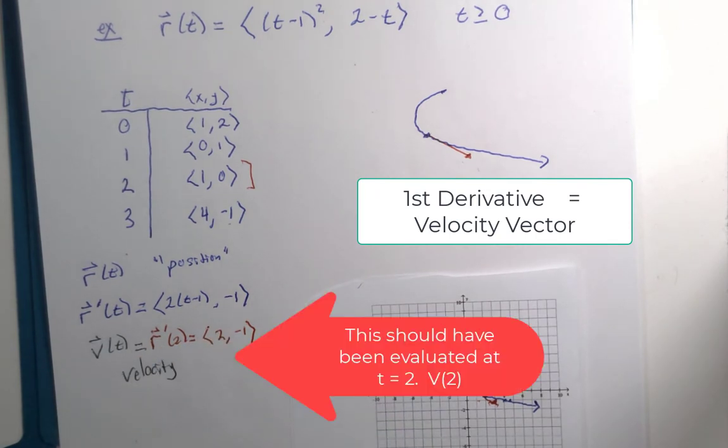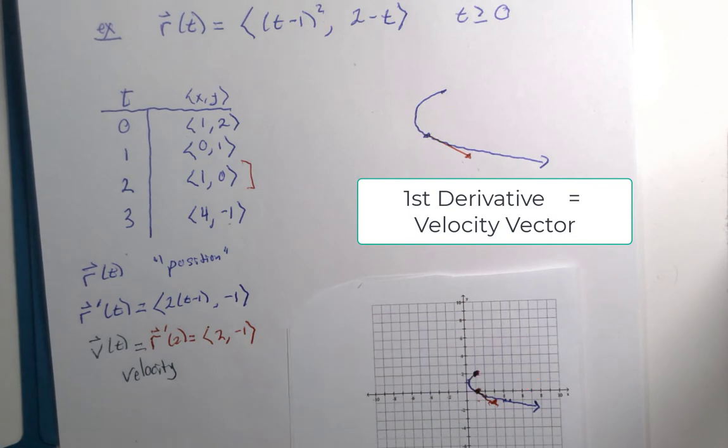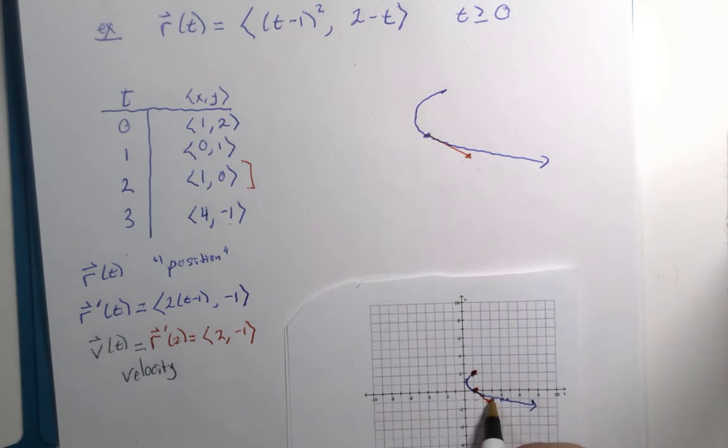You might recall from calculus, and some of you have had some physics, velocity and speed are not the same, we'll get to speed later. This is the velocity vector, which is part of the tangent on that graph, it goes right to and down 1 on this graph paper.